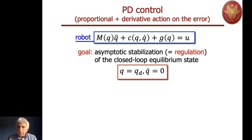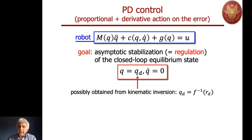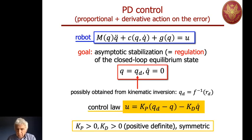Let's start considering the first control law for the problem at hand. We consider our robot with its full dynamics: the inertial terms, the Coriolis and centrifugal terms, the gravity terms. Our goal is to regulate — namely to obtain asymptotic stabilization of a desired equilibrium state in the closed-loop system. The equilibrium state has zero velocity and a desired configuration q_d. We consider a desired controller of the form u = K_p(q_d - q) - K_d * q_dot. This is called classical PD control with respect to the position error.